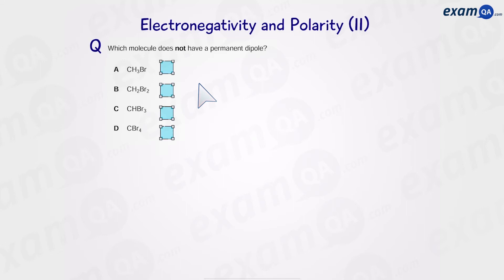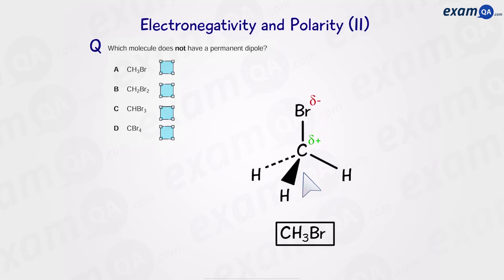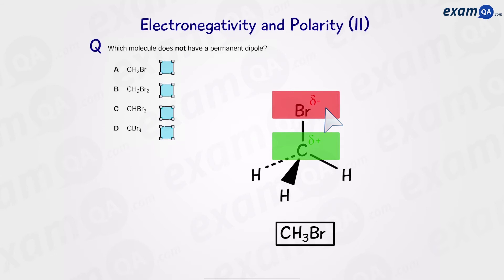Let's have a go at some exam-style questions. Here we have four molecules and the question is asking which molecule does not have a permanent dipole — meaning look at the molecule as a whole, not just the bonds. Starting with A, bromomethane: we have a carbon bonded to three hydrogens and one bromine. We know that carbon-hydrogen bonds are non-polar, and the carbon-bromine bond will be polar. So one side we have a positive charge and the other side there's a negative charge. This molecule does have two distinct regions, and therefore it is a polar molecule.